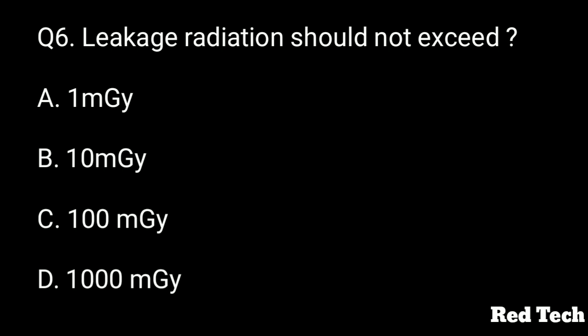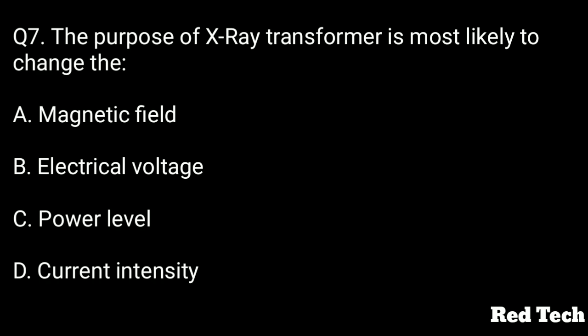Option A is 1 milligray, option B is 10 milligray, option C is 100 milligray, option D is 1000 milligray. The right answer is option A — leakage radiation should not exceed 1 milligray.